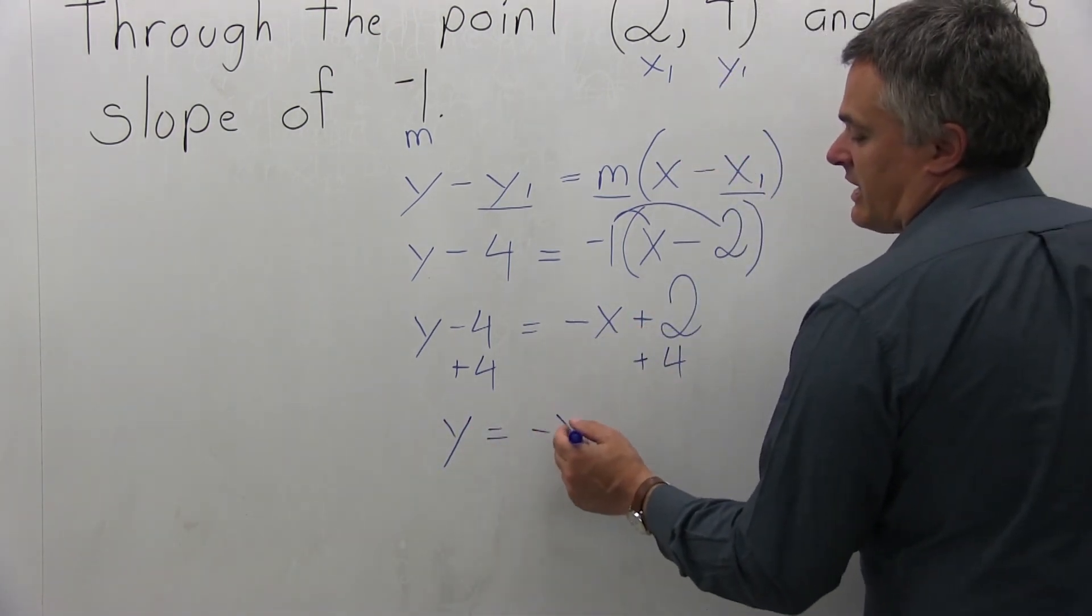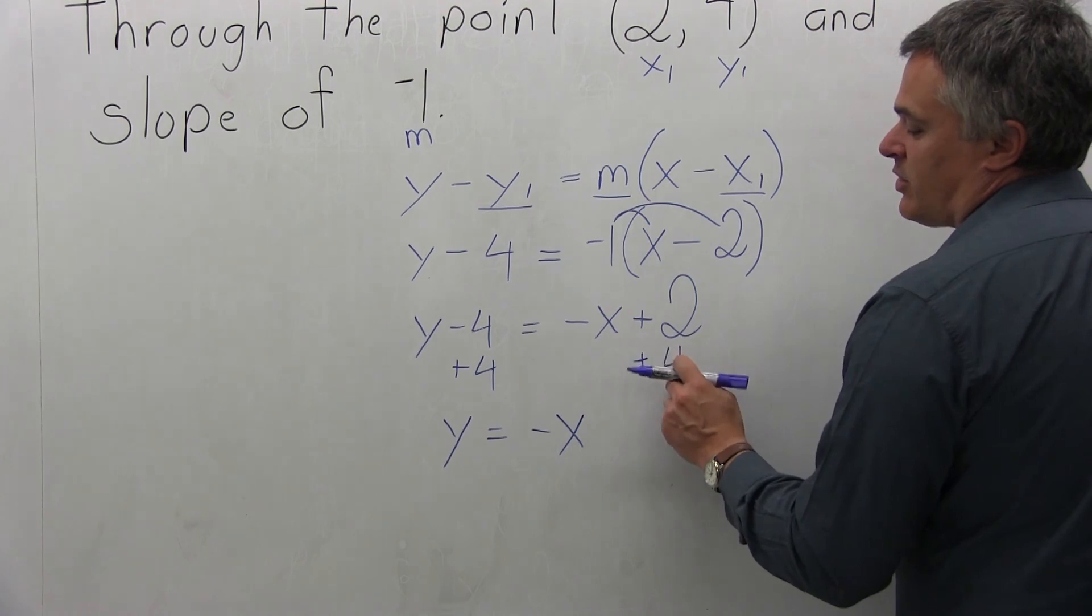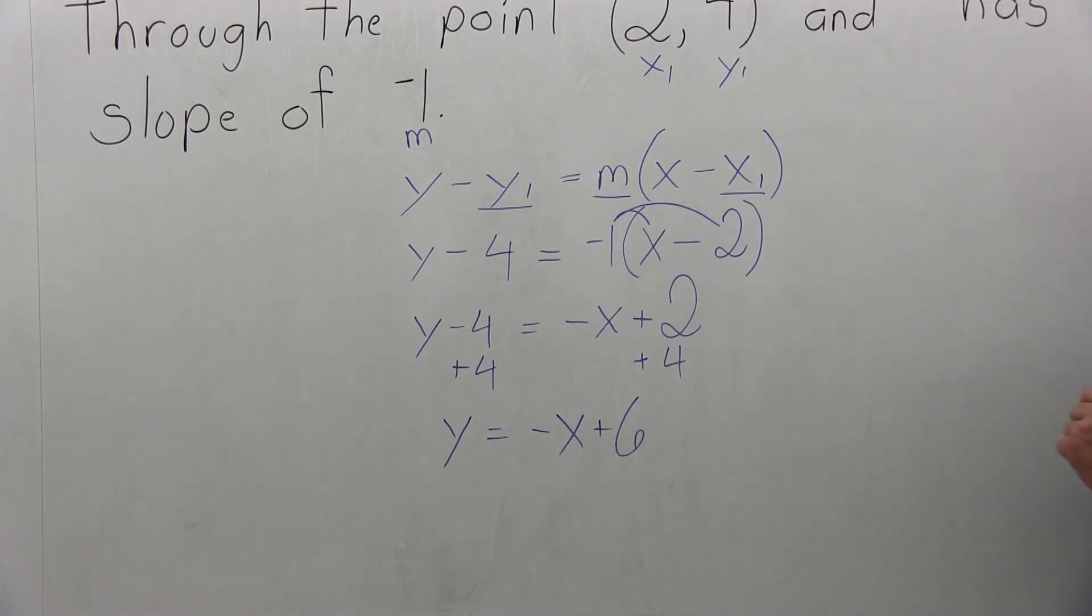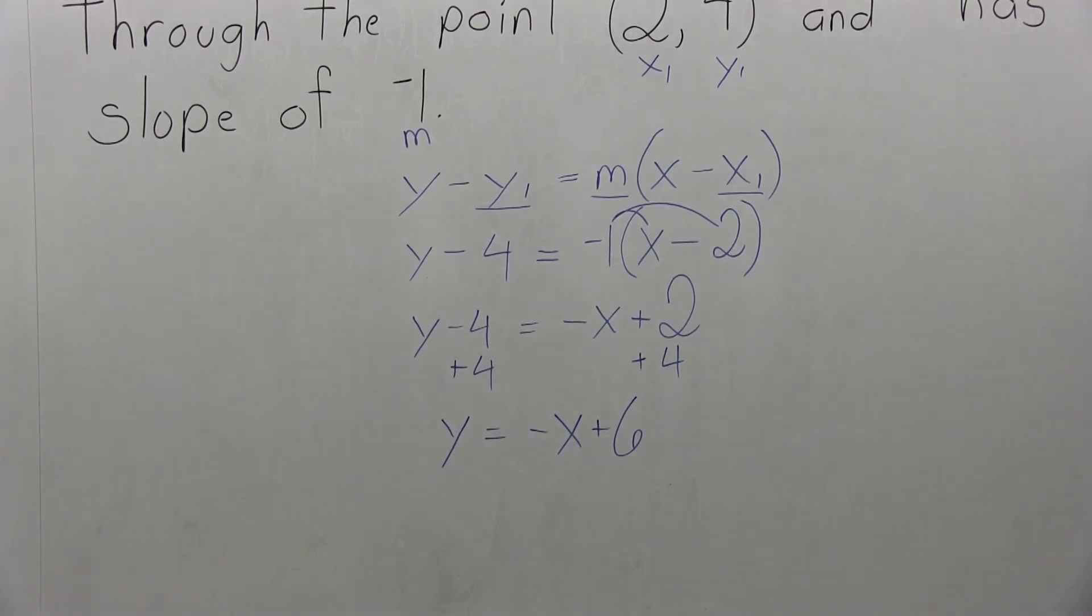And on the right, the negative x will stay. And positive 2 and positive 4 will give me positive 6. And now that's the answer in its more simplified form.